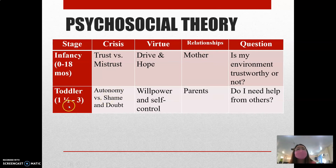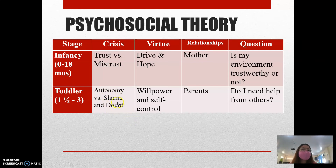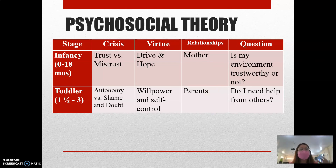Next is toddlerhood, from 1½ to 3 years old. The crisis to resolve is autonomy versus shame and doubt. Once this conflict is resolved, we develop willpower and self-control. The relationship involves both parents — not only the mother but the father as well. Autonomy means having control over things you can do, such as being allowed to take a bath on your own or feed yourself.